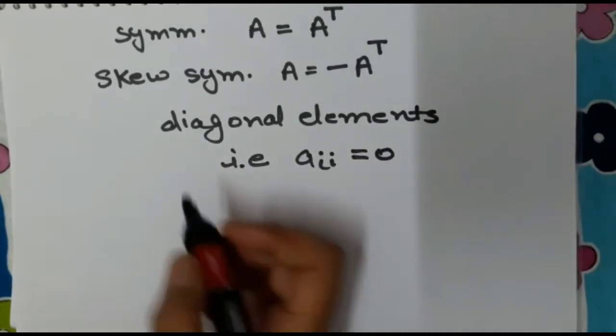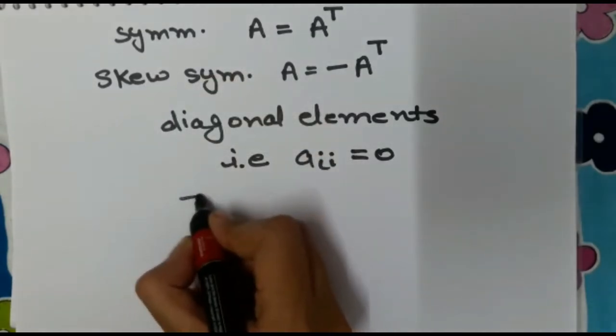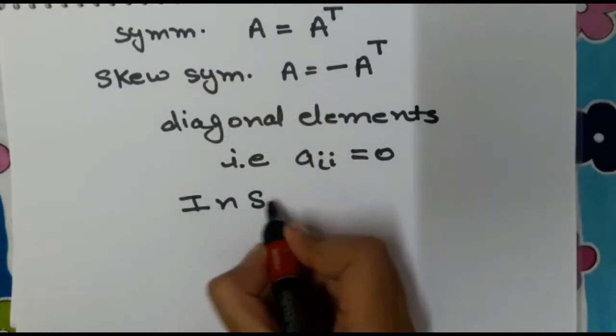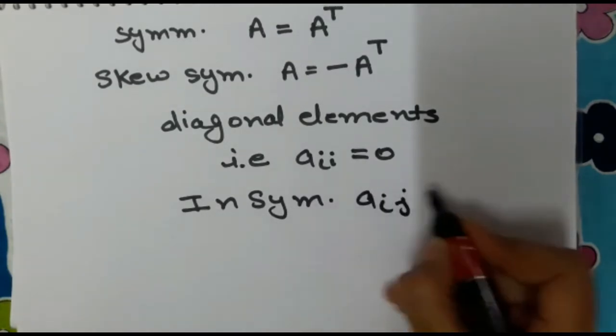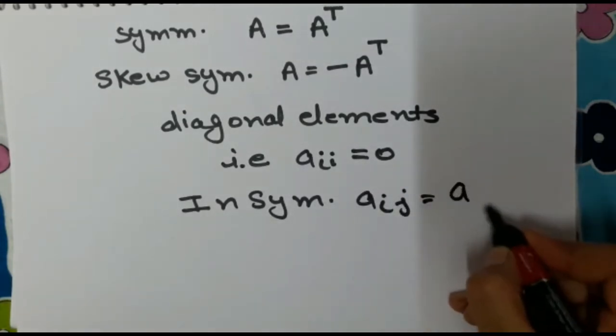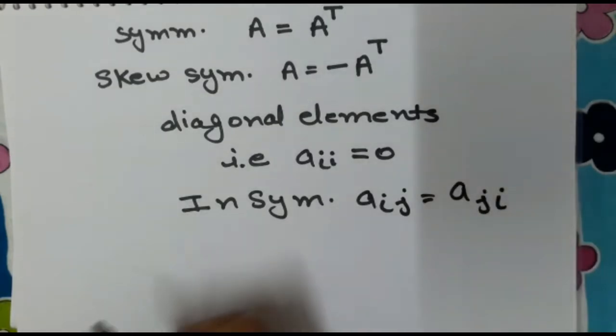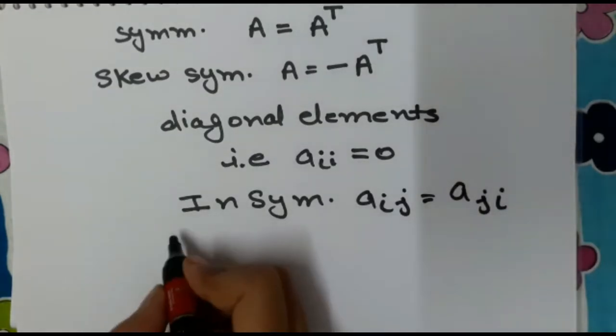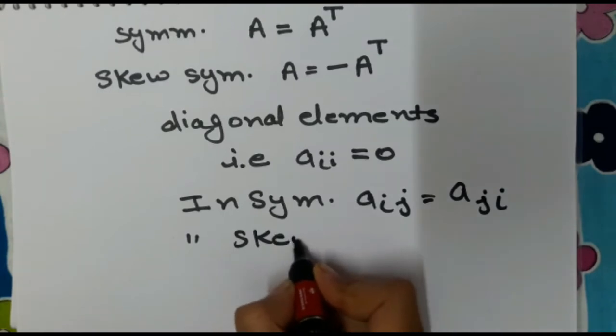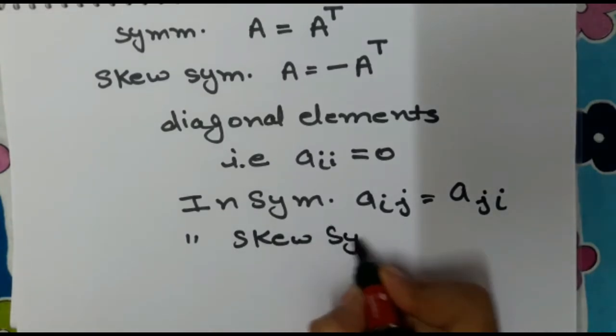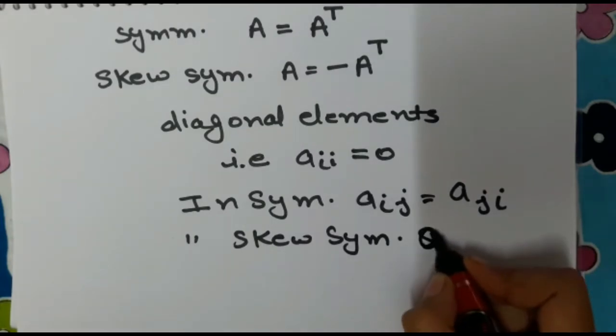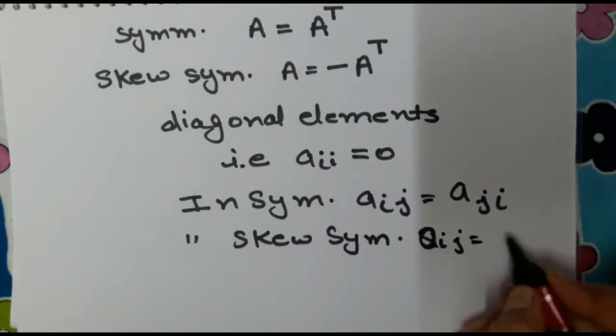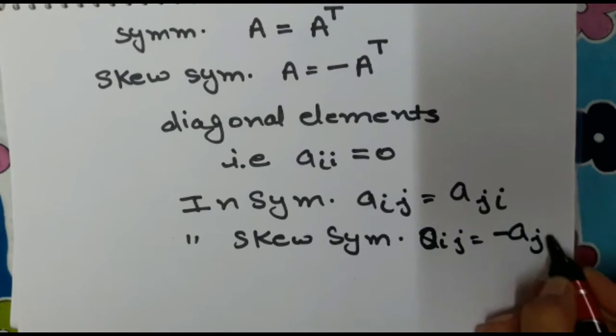Now how? In symmetric, A_ij is equal to A_ji. In skew symmetric, A_ij equal to minus of A_ji.